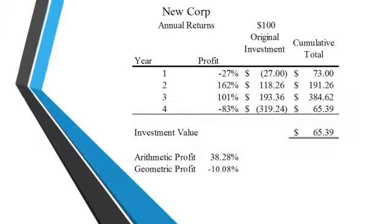And unfortunately, in year four, as happens more likely than not, it goes down 83%, which means a $319 loss. So you have $65 now, so you've actually turned $100 into $65. And like I said before, the arithmetic profit is 38%, and the geometric is 10%. Who do you think is right? You have less money than you invested, so it's obviously not an increase.